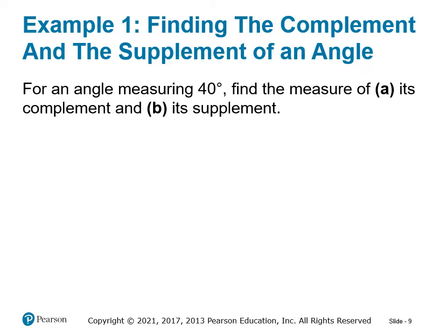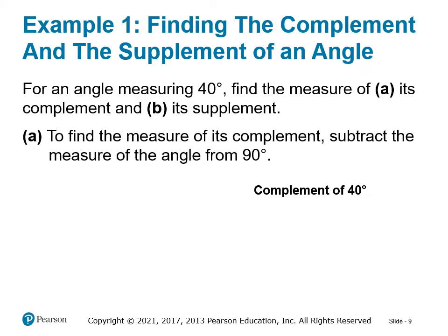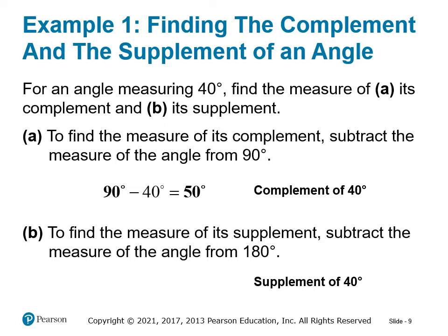For an angle measuring 40 degrees, find the measure of its complement and its supplement. Complementary angles make a corner, or 90 degrees, so we subtract 40 from 90: the complementary angle is 50 degrees, since 50 plus 40 equals 90. For the supplementary angle, we subtract 40 from 180 and get 140 degrees, because 140 plus 40 equals 180.